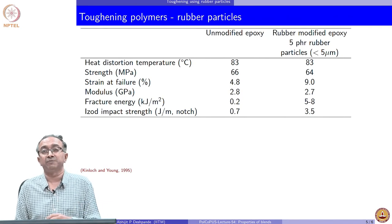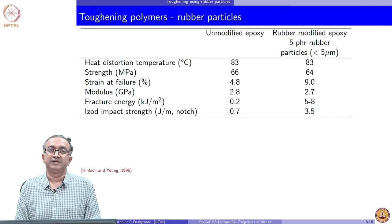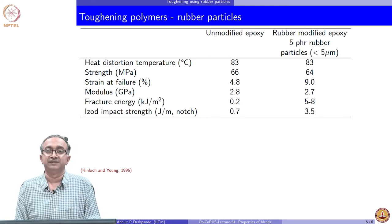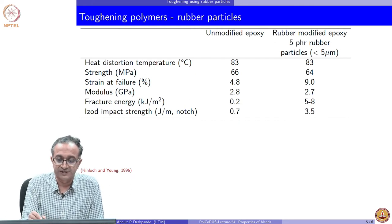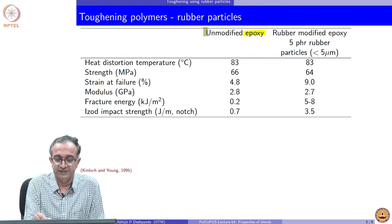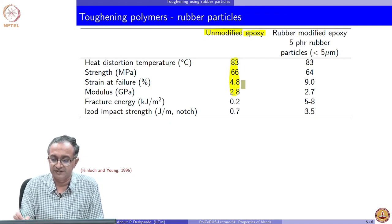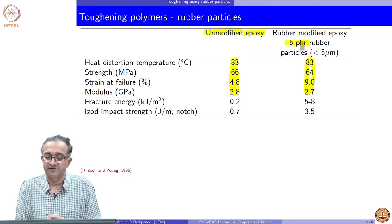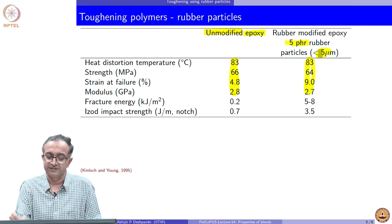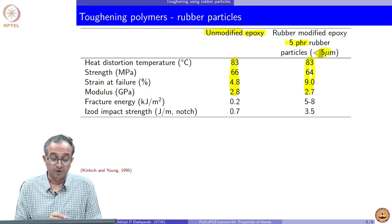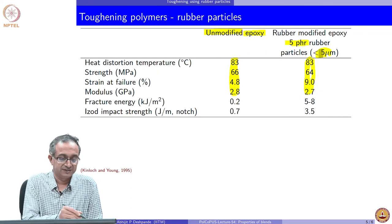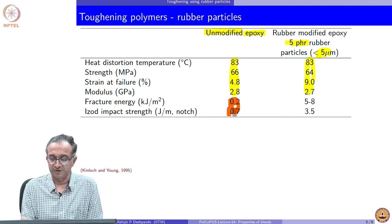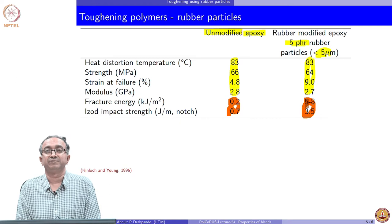Looking at the addition of rubber particles to many of the material systems, we already saw an example of high impact polystyrene where rubber particles are added. In this case, let us look at epoxy. If we have unmodified epoxy, then you can see that the properties are not very different compared to rubber toughened epoxy. In this case, 5 per 100 rubber particles are added and of a given size. But what you can notice is the difference which is there in terms of the impact properties. You can see significant improvement in the impact properties.